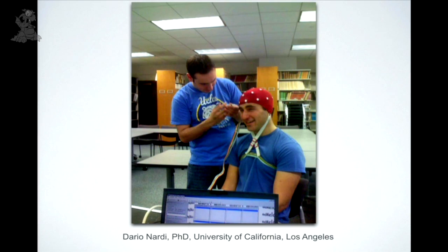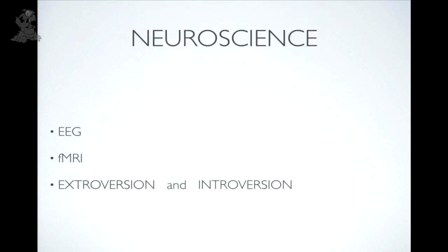Neuroscience is entering the field. Dario Nardi at UCLA uses EEG brain scans alongside personality research. FMRI has also contributed. Regarding extroversion and introversion — terms coined by Carl Jung — neuroscience has now demonstrated in hundreds of research papers that extroversion and introversion represent genuine, demonstrable differences within the brain, providing hard data to support personality work.